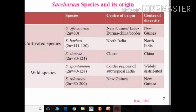Cultivated species are Saccharum officinarum, Saccharum barberi, and Saccharum sinense. The wild species are Saccharum spontaneum and Saccharum robustum.